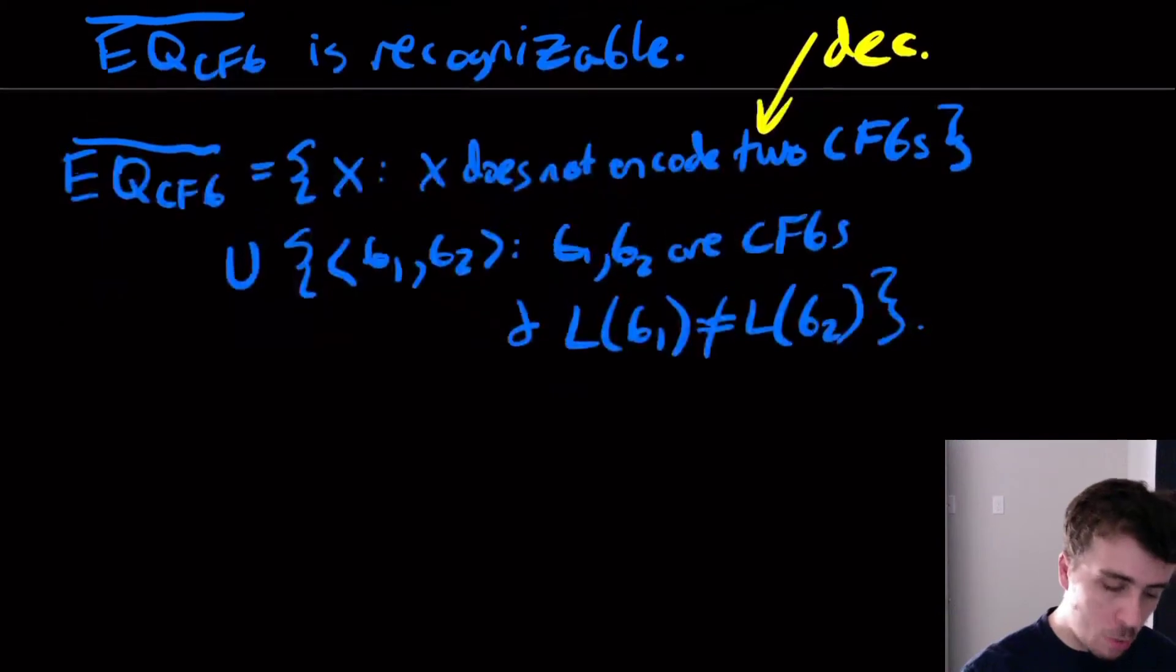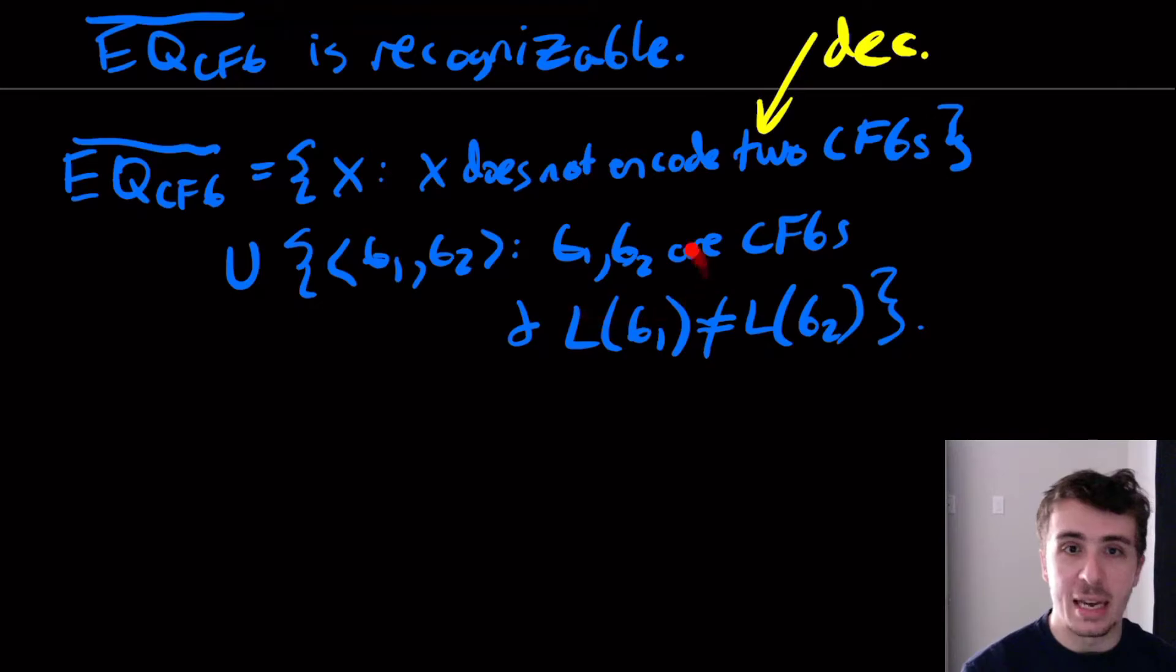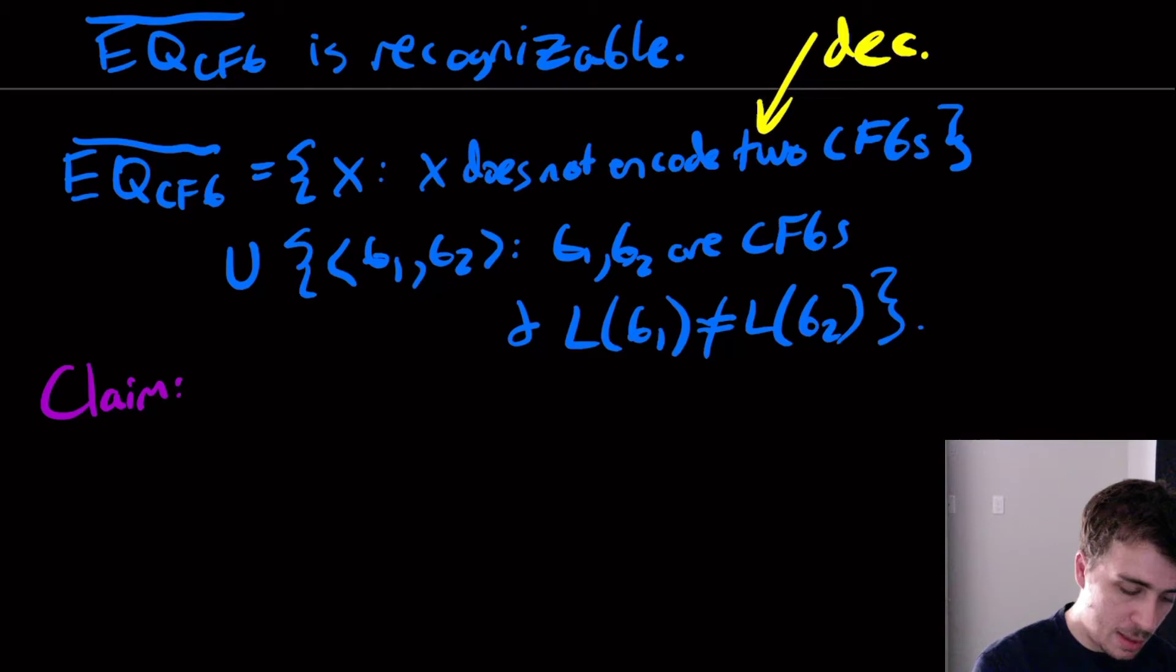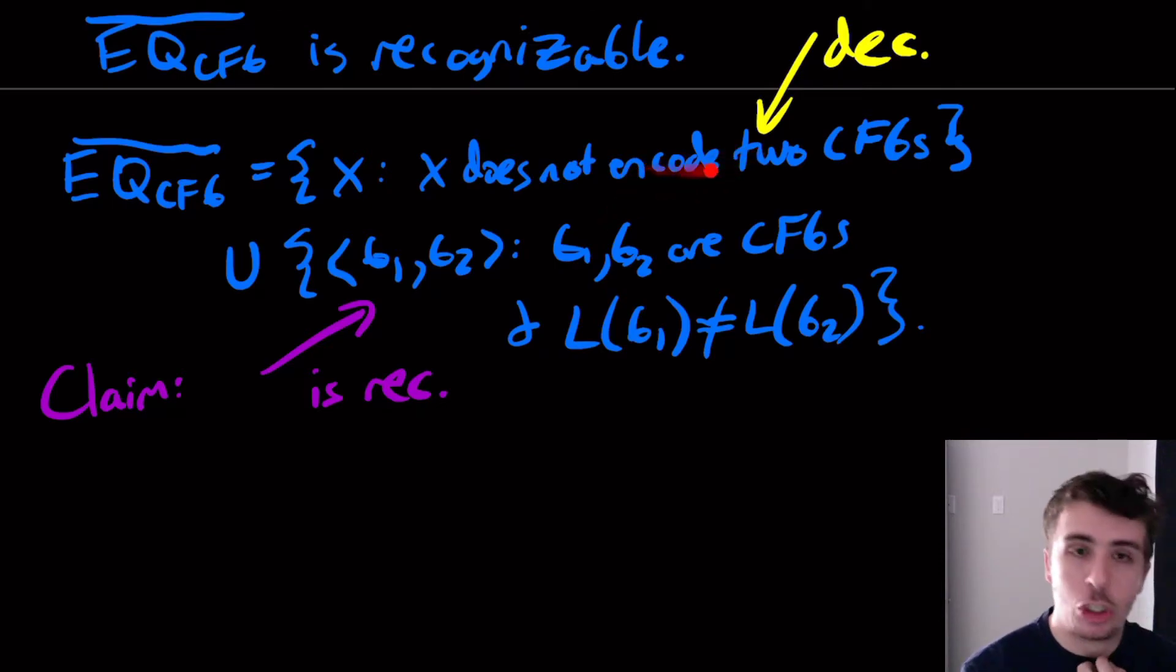So we need to deal with this guy right here. This thing is decidable, so this thing better be recognizable. I claim that this part right here is recognizable. In fact, if the first part was just recognizable that would be enough, but I claim it's decidable. But we need to show that the second part is recognizable.